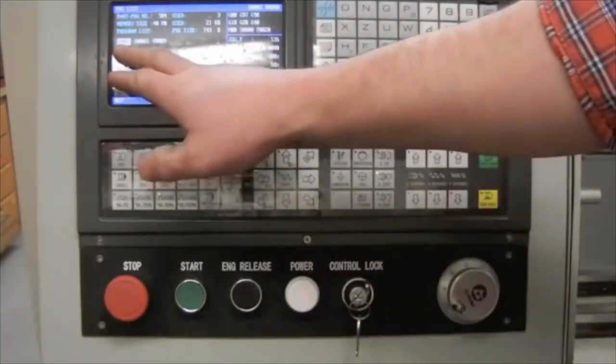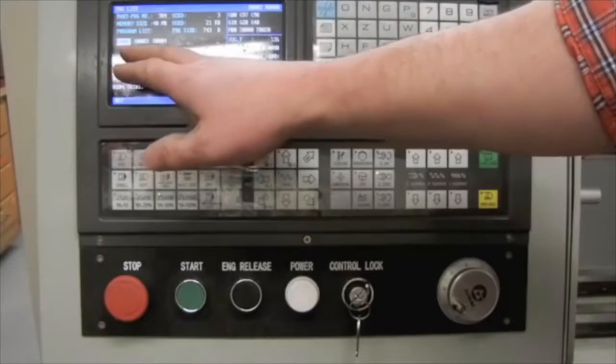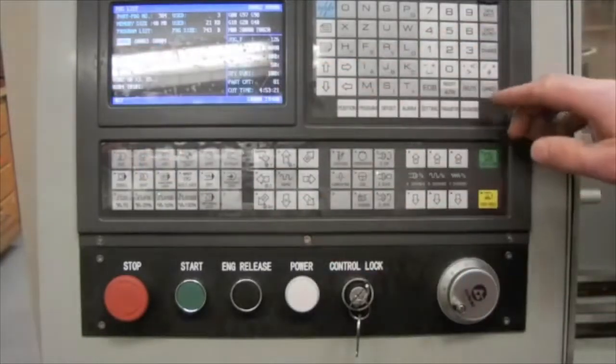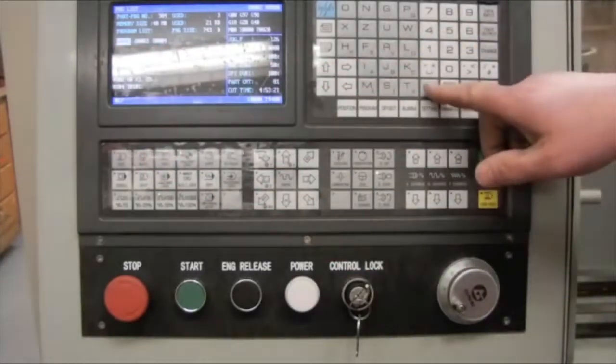In this case, I'm loading file O0002. Once I have my file highlighted, I press the EOB key for end of block, and it will go ahead and load that file.